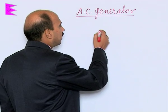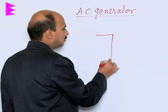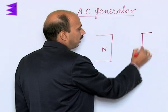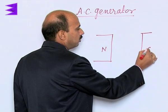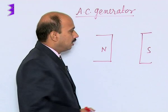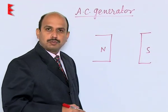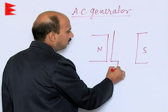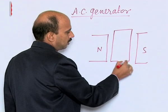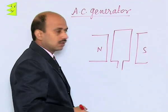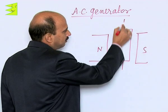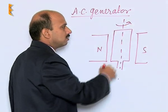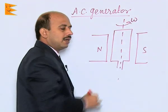Suppose you have one magnet whose north pole is on one side and south pole is on the other side. The direction of the magnetic field goes from north to south. There is a rectangular coil placed here with a shaft, and it is rotating about this shaft with angular velocity omega.